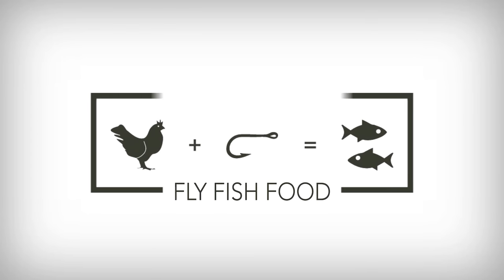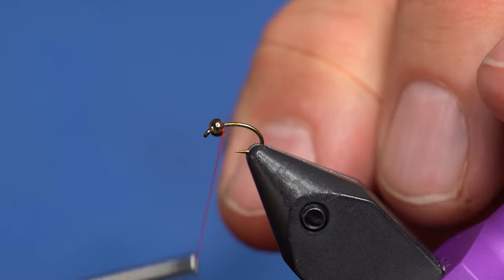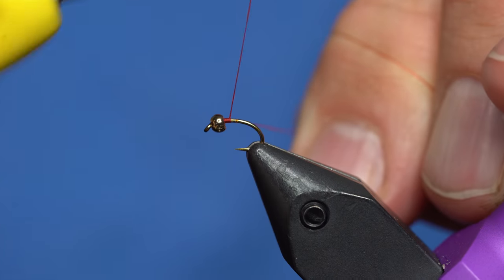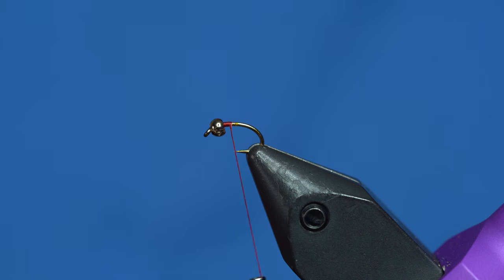Okay, we're gonna tie a hair's ear, but it's a micro hair's ear, a great winter pattern. This is a super basic pattern, a little micro hair's ear. I've got a size 18 curve shank hook in the vise and I'm using 70 denier thread, this is Danville.